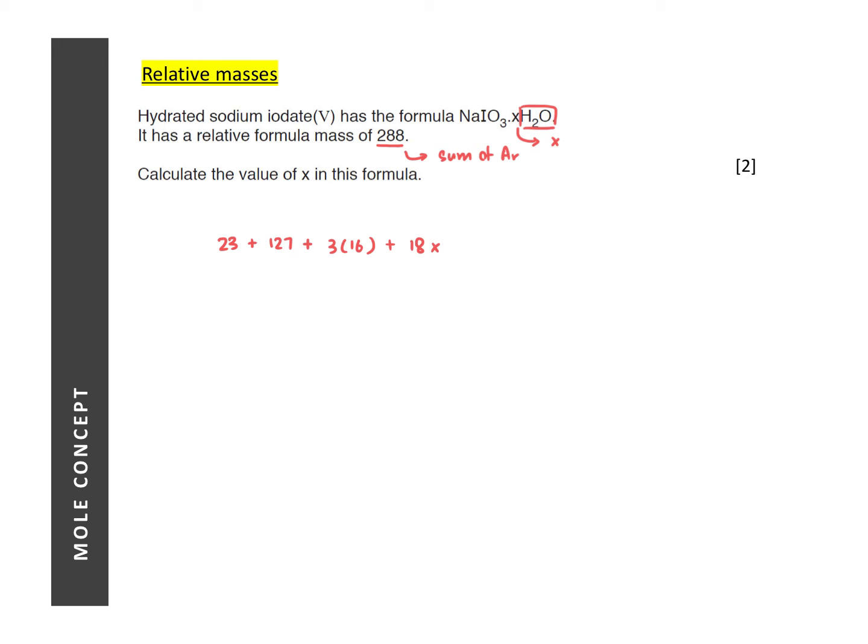The molecular mass of H2O is 18. So if there are X of them, it will be 18X. And the sum of all the atomic masses of all the atoms in the formula will be equal to 288. So if you calculate it correctly, X actually is equal to 5. Now X is usually a whole number. So if you don't get a whole number, it means that there could be some error in your calculation.